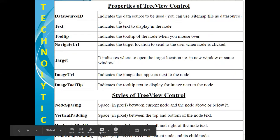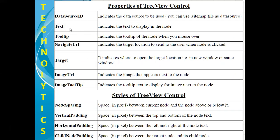DataSourceID — here you can specify the data source to be used. Next, the Text property, which indicates the text to be displayed on the node. Tooltip indicates the tooltip of the node when you mouse over it. NavigateURL indicates the target location. Target indicates where to open the target location — that is, on a new window or on the same window. ImageURL indicates the image that appears next to the node. Image Tooltip indicates the tooltip text to display for the image next to the node.